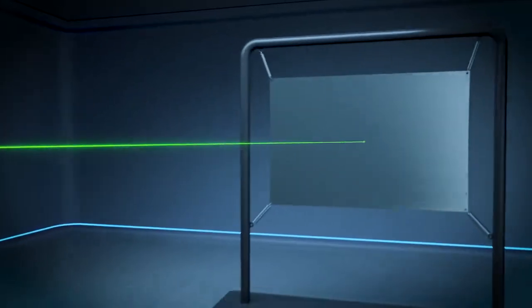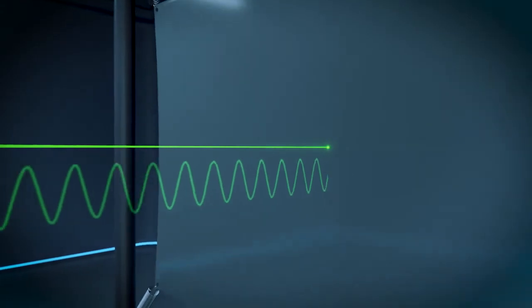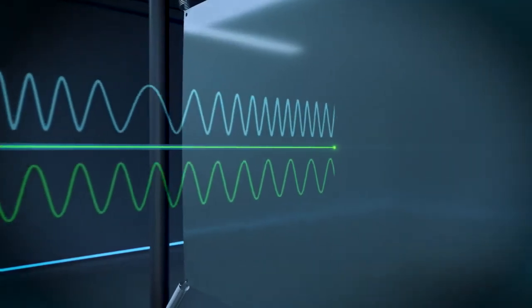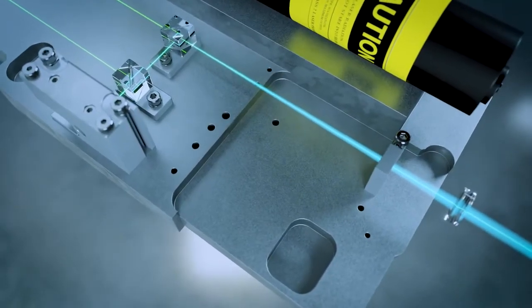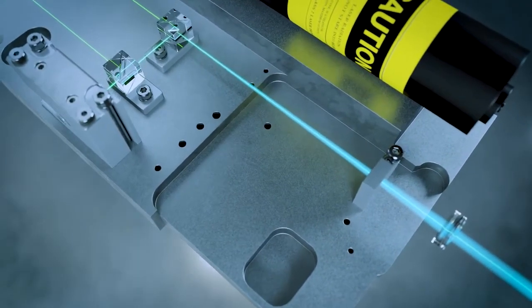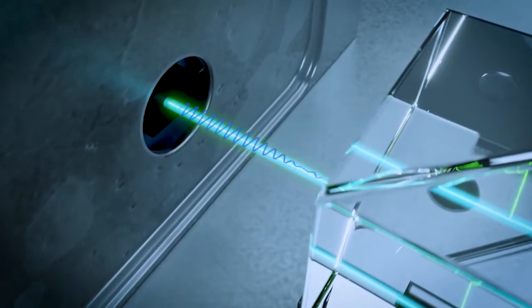Depending on the velocity and displacement, the back scattered light is changed in frequency and phase. The characteristics of the motion are completely contained in the back scattered light. The superposition of this light with the reference beam creates a modulated detector output signal.